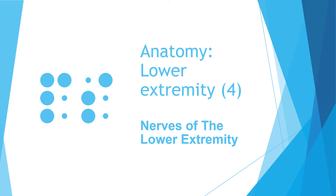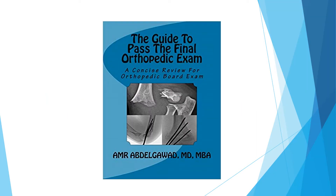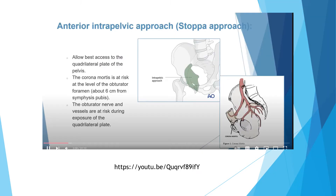This lecture is the fourth lecture in the anatomy of the lower extremity, and in this lecture we're going to talk about nerves of the lower extremity. This is a very important topic in the exams. A good source is the first lecture in this series, the anatomy one, which talks about the pelvis and the thigh, because many of the information we're going to discuss today were also mentioned in that lecture.